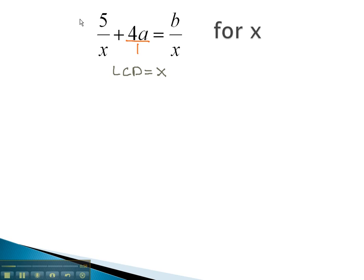So we multiply each term by this x. Notice, in the first and last fractions, the x's will divide out completely. This will leave 5 plus 4ax equals b.